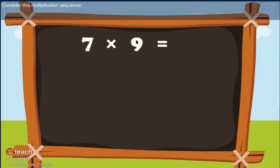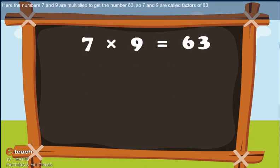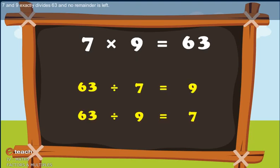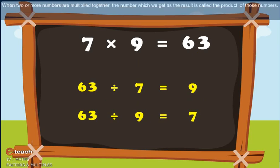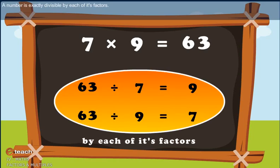Factors. Consider this multiplication sequence. Here the numbers 7 and 9 are multiplied to get the number 63. So 7 and 9 are called factors of 63, and 63 is called the product. 7 and 9 exactly divide 63 with no remainder left. When two or more numbers are multiplied together, the result is called the product, and the numbers multiplied together are called the factors of the product. A number is exactly divisible by each of its factors.